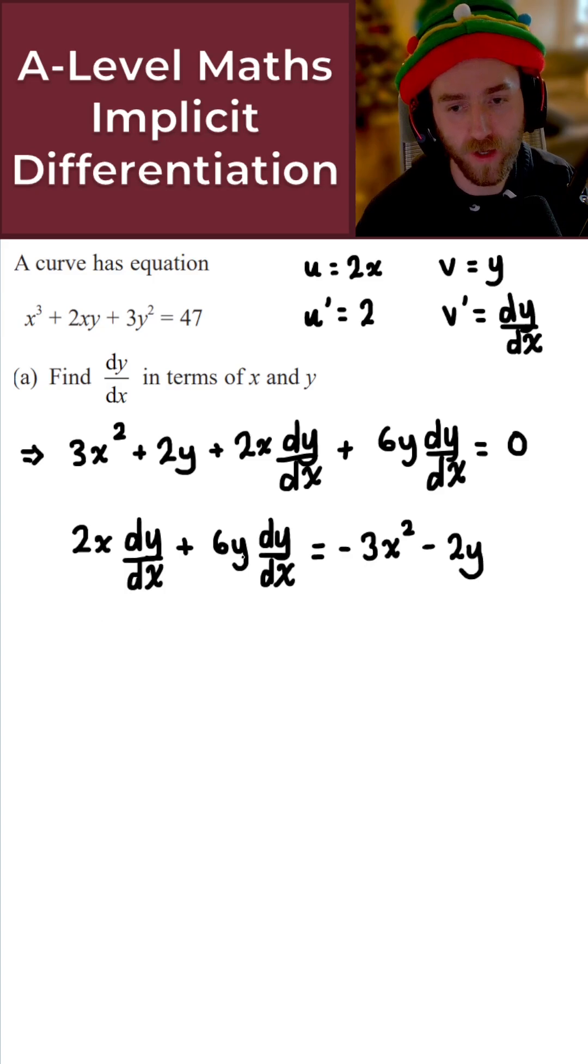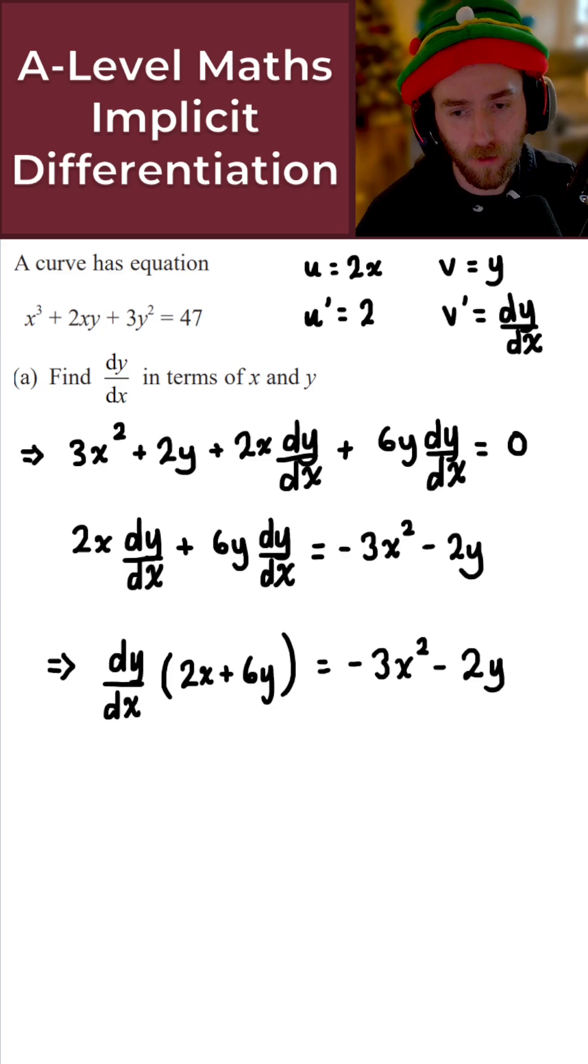What we can now do is factor out dy by dx on the left-hand side. Let's do that again underneath. Once we pull out dy by dx as a factor, we obtain the following.